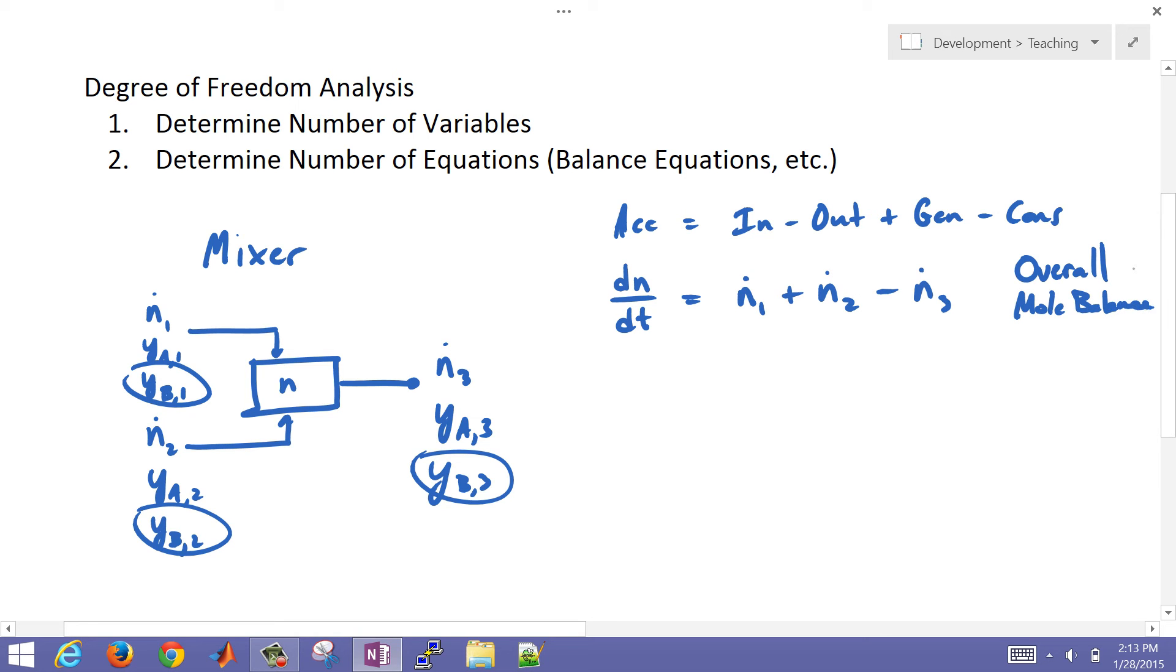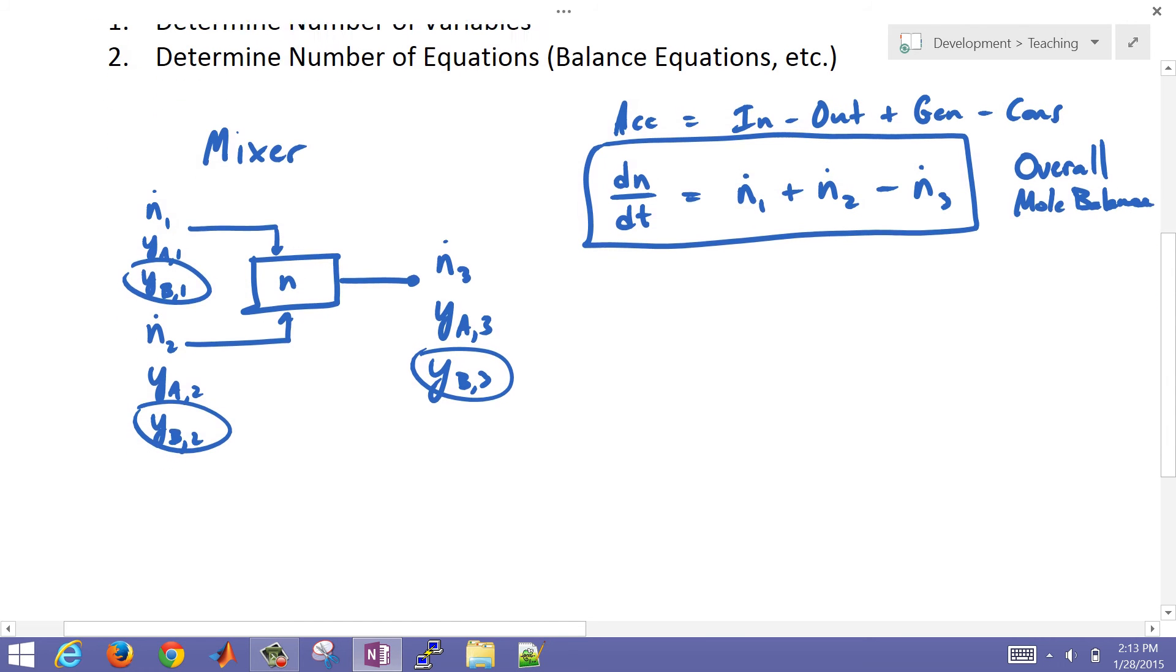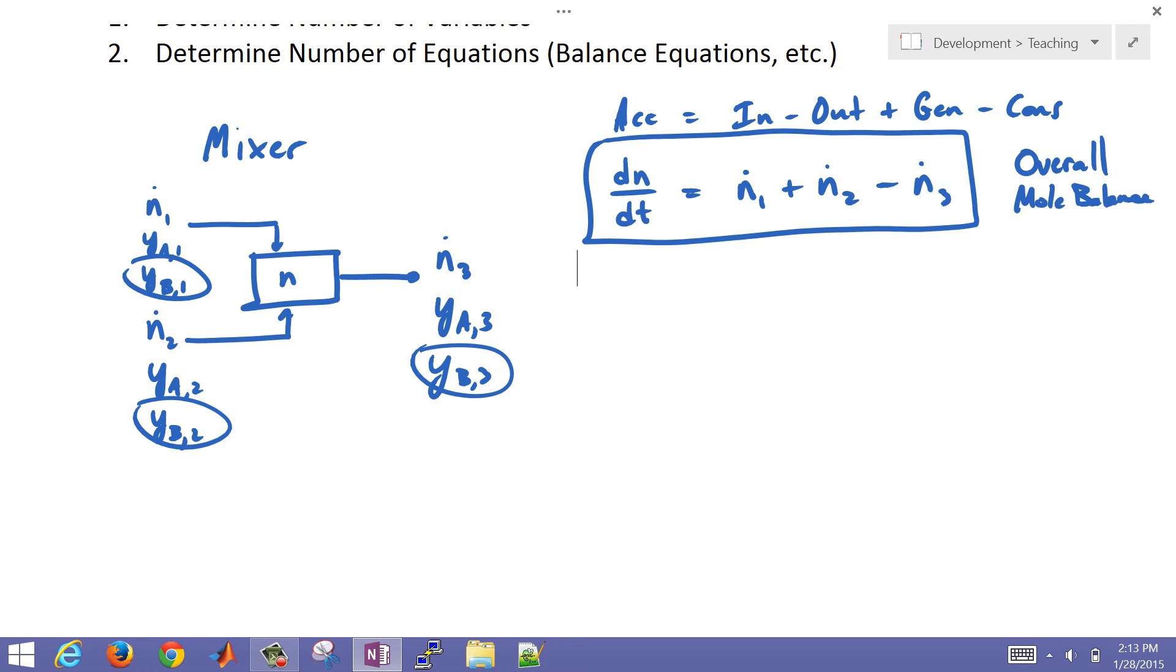We're also going to write species balances as well. So we have our overall mole balance. That's our first one. Now, if we want to write the species balance, we've got to actually write that on a dN_a/dt. So this is going to be the moles of a that are accumulating within this control volume. And that's going to be equal to n_1a, so the amount of flow of a coming in in stream one plus the flow rate of a coming in through stream two minus the molar flow rate of a leaving through stream three.